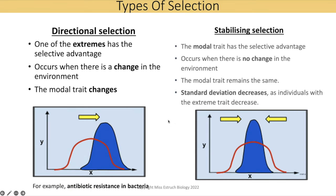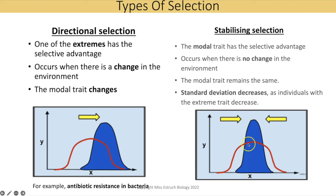Stabilising selection is when the modal trait — the most common trait — is also the one that provides a selective advantage. This occurs when there is no change in selection pressure or the environment. As a result, even more individuals over many generations will have that middling trait. The extreme traits are lost, producing a taller, narrower peak, and the standard deviation decreases because there is less variation around that mean.